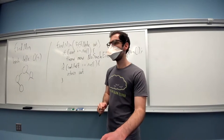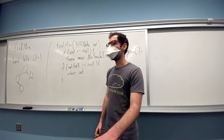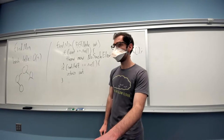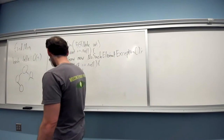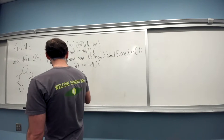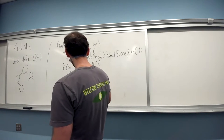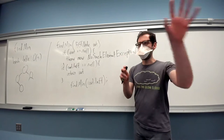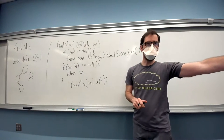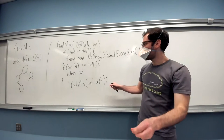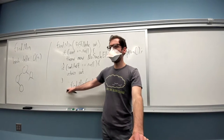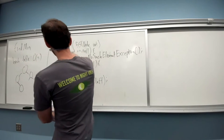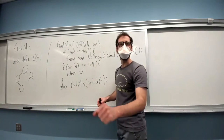A recursive call seems like a nice idea. What would my recursive call be? Find min of root.left — I want to find the minimum of the left subtree, because the minimum is down in there somewhere. The result this call should return is whatever the minimum to the left is.